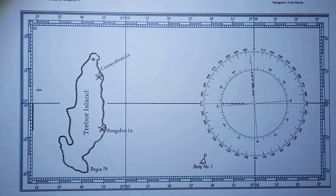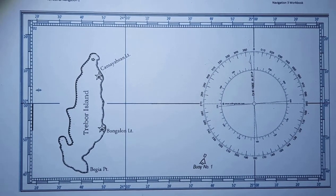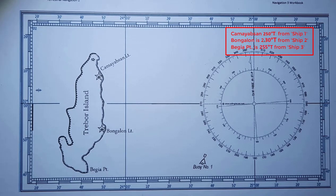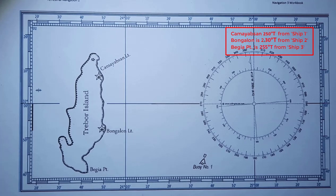Let's start plotting the LOP of Ship 1, Ship 2, and Ship 3, referencing Kameyam Sun, Bungalun, and Behia. The predetermined bearings are as follows: bearing of Kameyam Sun from Ship 1 is 250 degrees true. Bungalun is 230 degrees true from Ship 2. From Ship 3, the Behia point is 255 degrees true.